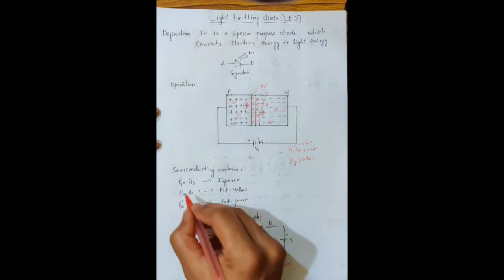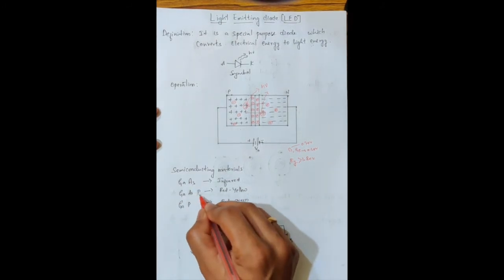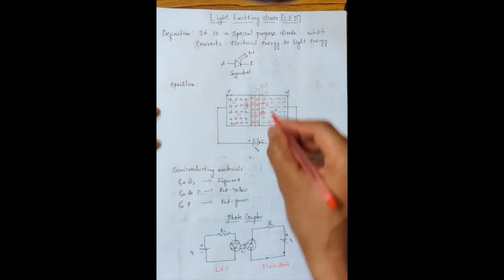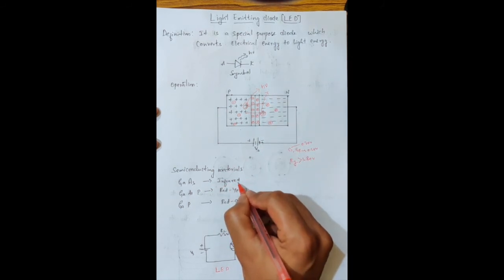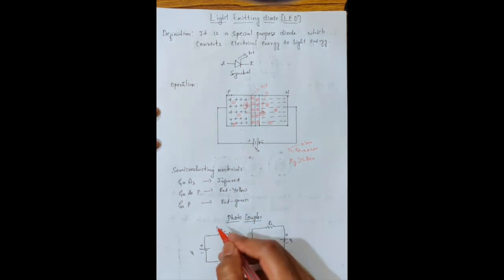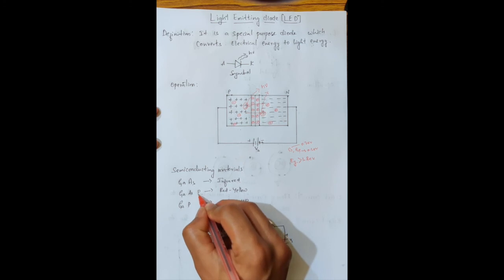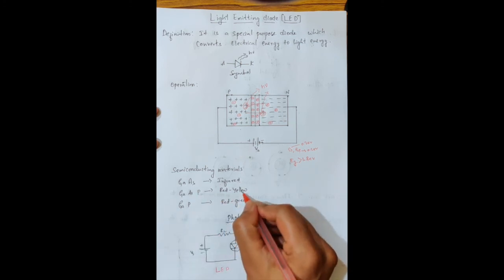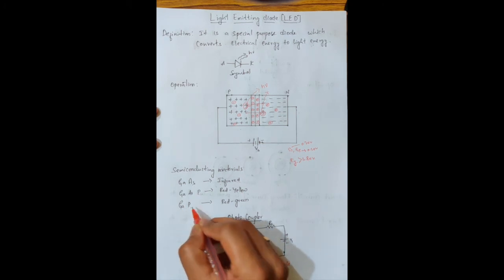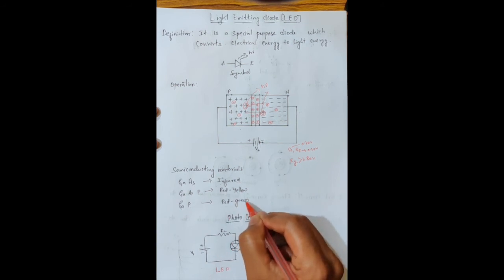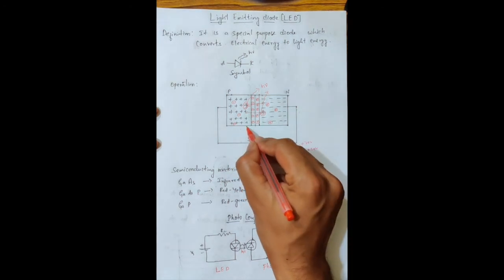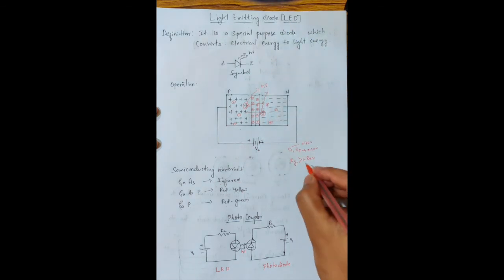We must use semiconducting materials with an energy gap greater than 1.8 eV. Examples include: Gallium Arsenide (GaAs), Gallium Arsenide Phosphide (GaAsP), and Gallium Phosphide (GaP). Using GaAs, the emitted light is in the infrared range. Using GaAsP, the emitted light is red to yellow. Using GaP, the emitted light is red or green — all visible to the naked eye. The key condition is that the semiconducting material must have an energy gap greater than 1.8 eV.